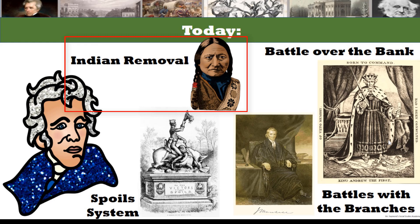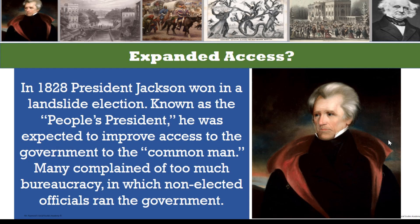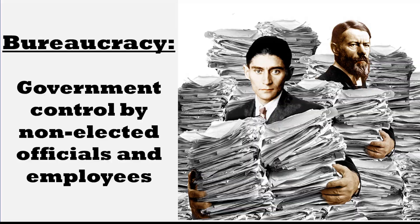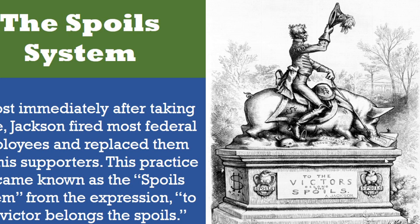Our themes for today are Indian removal, Jackson's battle over the National Bank, his implementation of the spoils system, and his battles with the other branches. In 1828, President Jackson won in a landslide election, known as the People's President. He was expected to expand access to the government to the common man. Many complained of too much bureaucracy — a situation in which non-elected officials run the government, and people still complain about this today. Almost immediately after taking office, Jackson fired most federal employees and replaced them with his supporters.